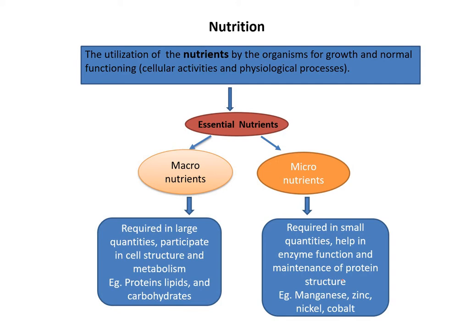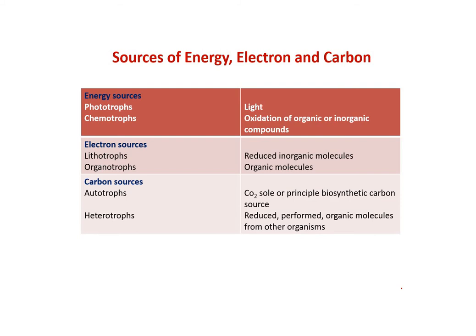All organisms need carbon, hydrogen, oxygen, and sources of electrons. Carbon is required as the backbone for all organic molecules from which organisms are made. Hydrogen and oxygen are found in organic molecules and are important elements. Electrons are needed to provide energy through the electron transport chain and oxidation-reduction reactions, and they also reduce molecules during biosynthesis.